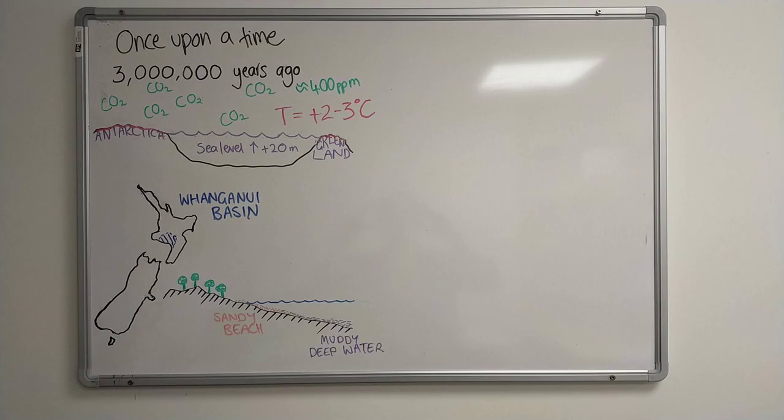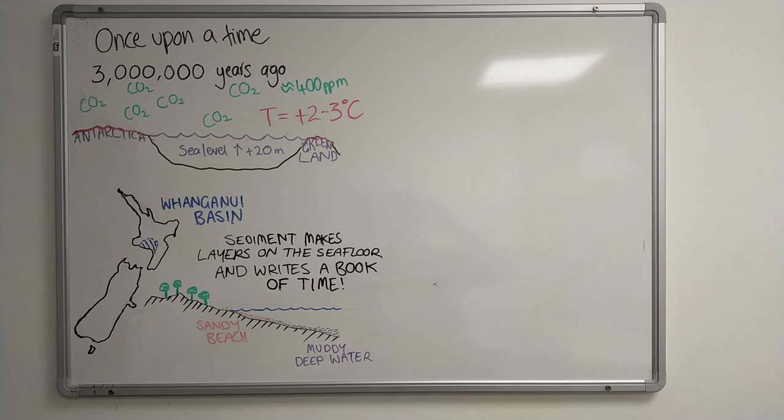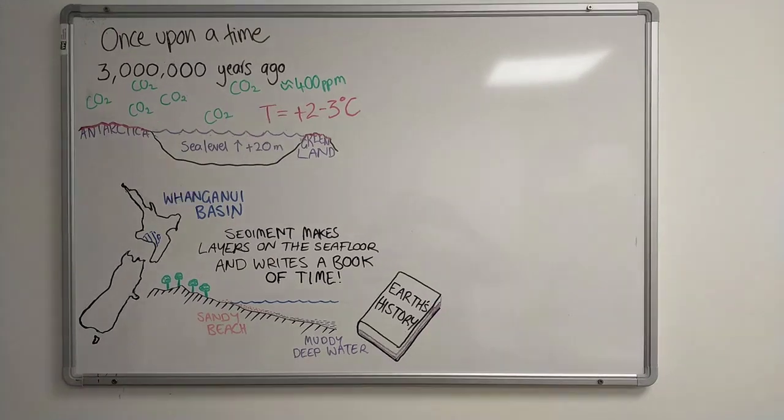Sandy sediments are found close to the beach where you have lots of waves. And as you get deeper, the sediments get muddier because the waves don't reach the seafloor. These sediments make layers and they write a book of time, where each layer is a page in Earth's history.